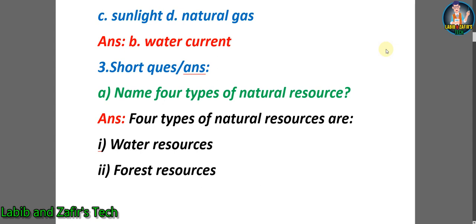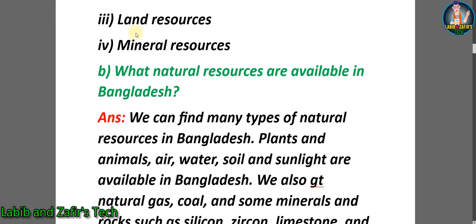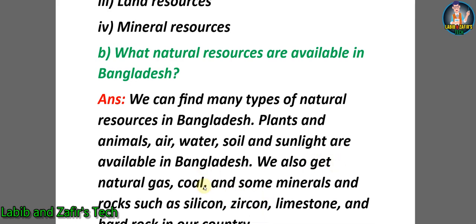Now let's go through some short question answers. a) Name four types of natural resources. Answer: The four types are number 1: water resources, number 2: forest resources, number 3: land resources, number 4: mineral resources. b) What natural resources are available in Bangladesh? Answer: We can find many types of natural resources in Bangladesh. Plants and animals, air, water, soil, and sunlight are available. We also get natural gas, coal, and some minerals and rocks such as silicon, zircon, limestone, and hard rock in our country.